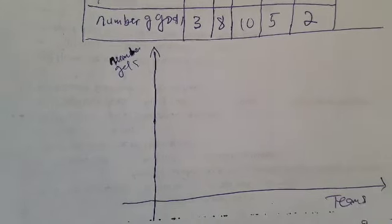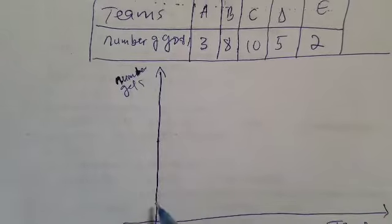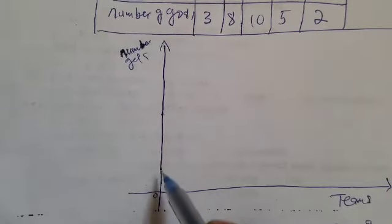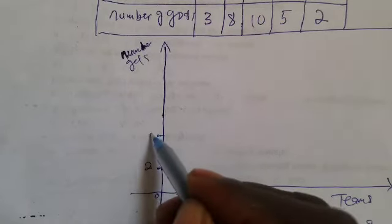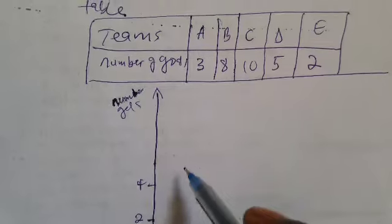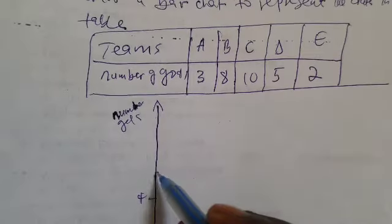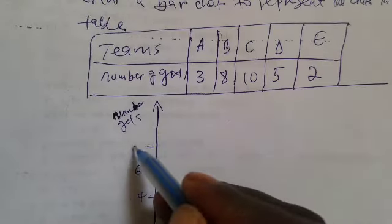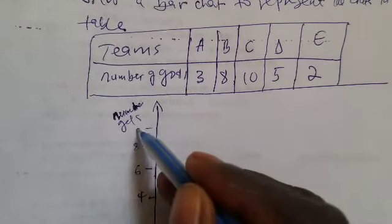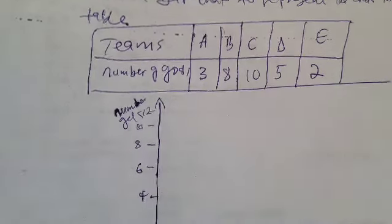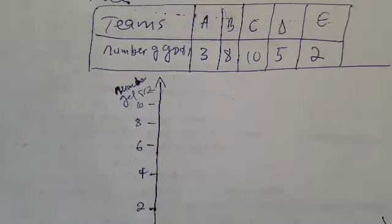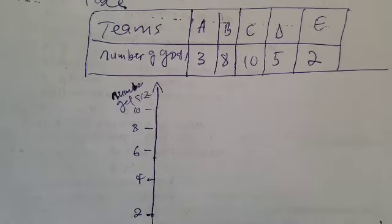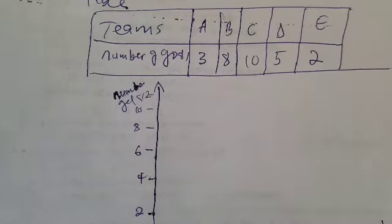In the bar chart, the starting point is zero. Then we mark two, four, six, eight, ten, and twelve along the vertical axis. From the table, Team A scored three goals, which is around here on the scale.